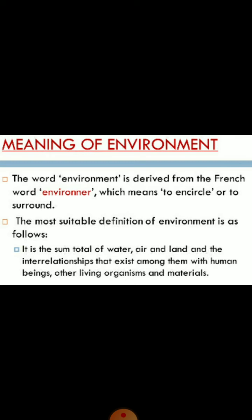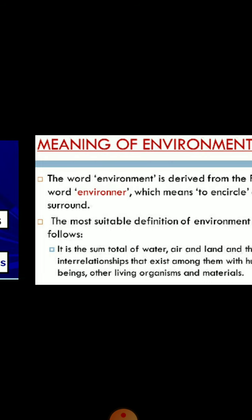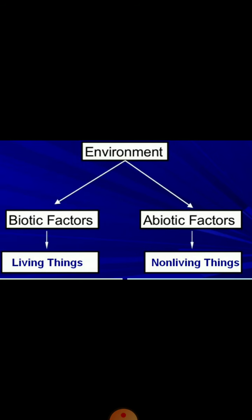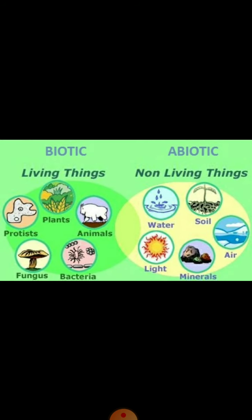The environment is a combination of natural, human and human-made environments. The natural environment includes both biotic and abiotic components. Biotic components include all living organisms such as plants and animals.